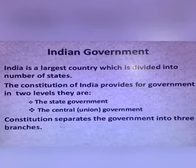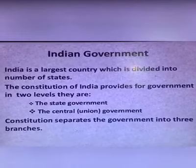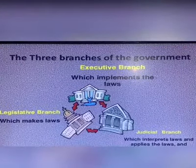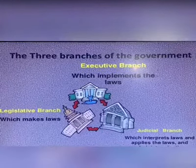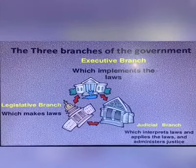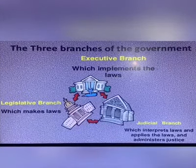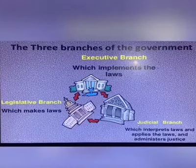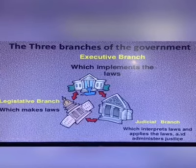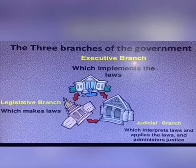The Constitution separates the government into three branches. These three branches of the government are: the legislative branch, which makes laws; the executive branch, which implements the laws; and the judicial branch, which interprets the laws, applies the laws, and administers justice.